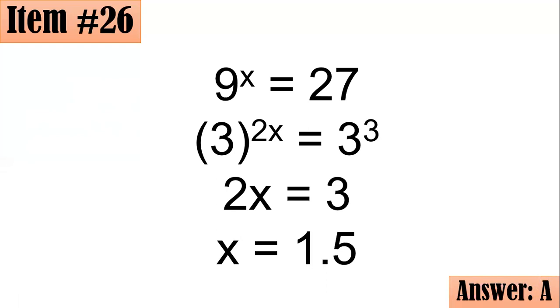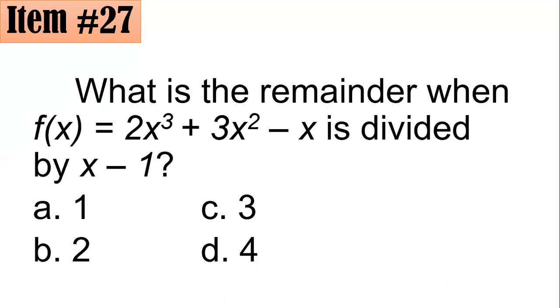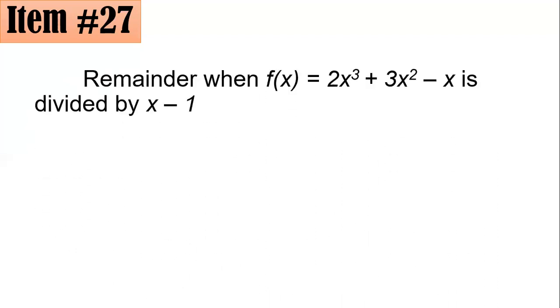Let's proceed to number 27. What is the remainder when f(x) = 2x³ + 3x² - x is divided by x - 1? Is it 1, 2, 3, or 4? From here we will utilize the remainder theorem. That is, if you divide by a linear binomial divisor with a leading coefficient of 1 here, what you can do is equate this divisor to 0. And solving x - 1 = 0, you have x = 1.